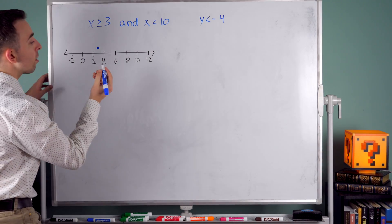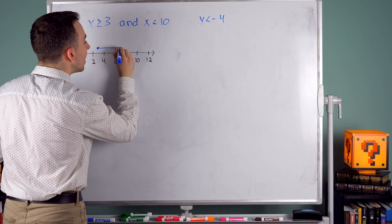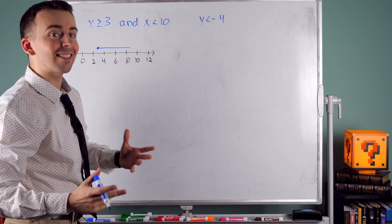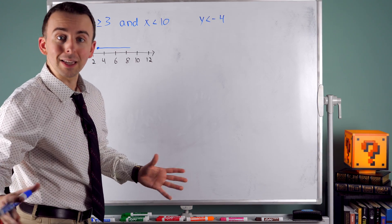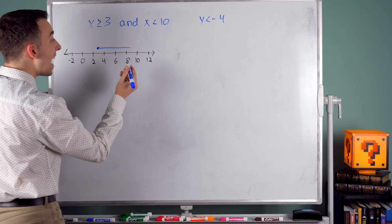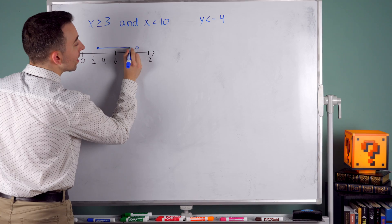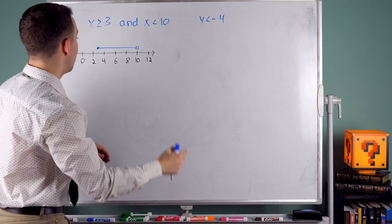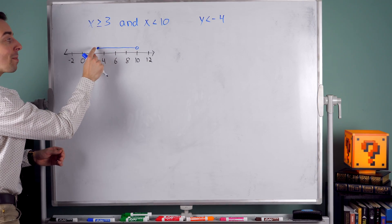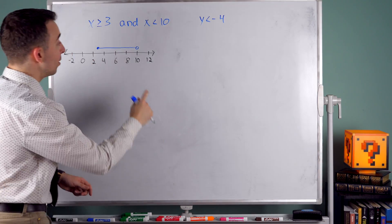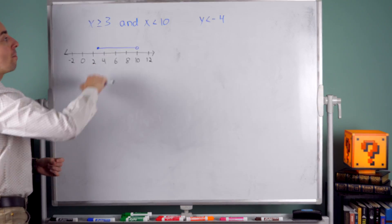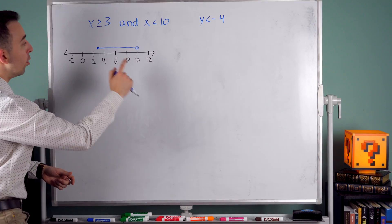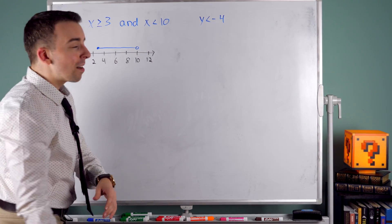So how do we graph this AND inequality? We want to include 3, right? 3 satisfies the inequality because 3 is at least 3 and 3 is less than 10. So at 3, which is right between 2 and 4, we put a solid filled-in point that includes 3. Now we want to include numbers greater than 3, so we draw a line in the positive direction, but we stop at 10 because we only want numbers less than 10. Do we want to include 10? No, because 10 isn't less than 10. So at 10 we put an open circle.